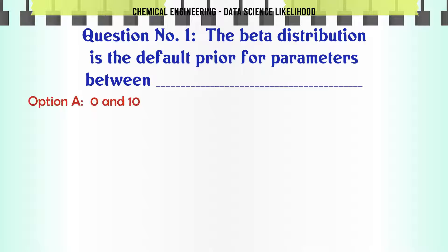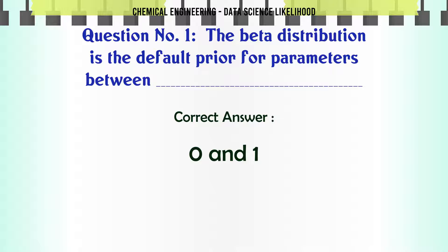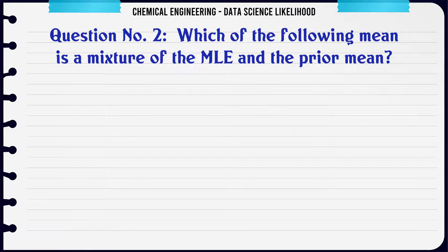The beta distribution is the default prior for parameters between: A. 0 and 10, B. 1 and 2, C. 0 and 1, D. None of the mentioned. The correct answer is 0 and 1.